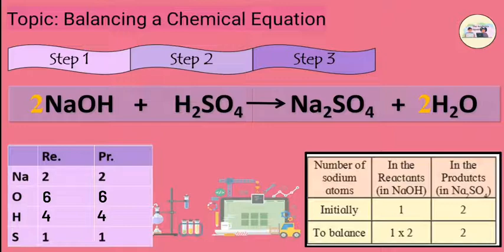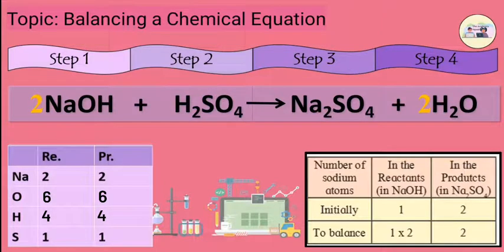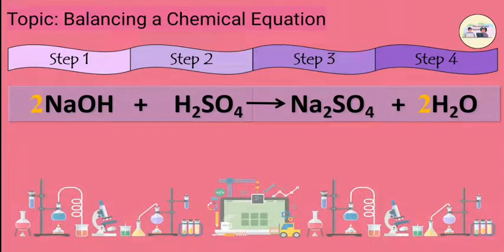Now, if we see equation 3, we find that the equation is balanced on both the sides. Step 4: Write down the final balanced equation again. 2NaOH plus H2SO4 gives Na2SO4 plus 2H2O.